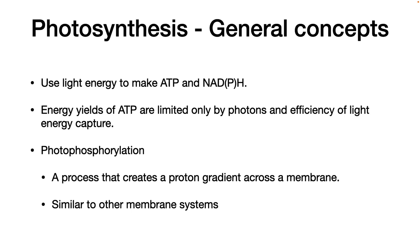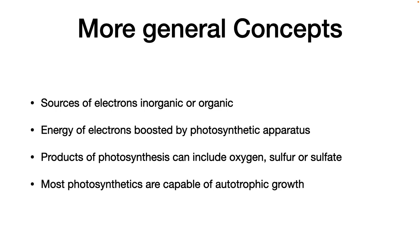Third, they use photophosphorylation to create a proton gradient across the membrane. ATP synthase then dissipates that gradient to synthesize ATP. As we go through the process, you will notice similarities to other respiratory chains we have covered. Fourth, the source of electrons can be from inorganic or organic compounds.